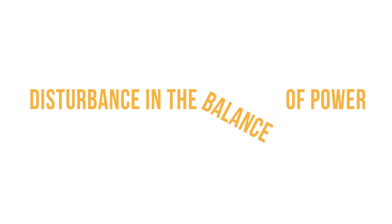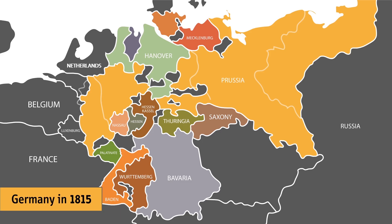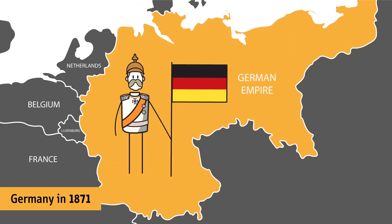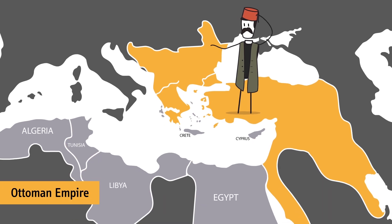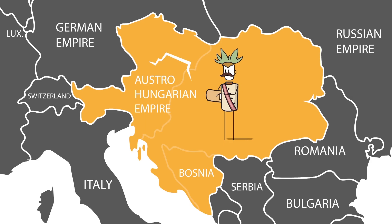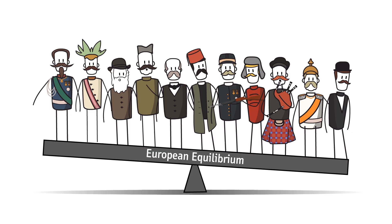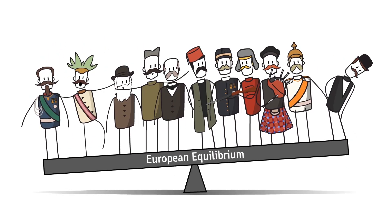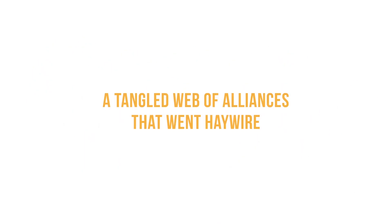Two: disturbance in the balance of power. The unification of Italy and of Germany in the mid-19th century, the crumbling of the 500-year-old Ottoman Empire, an unstable post-revolution France, and an Austria-Hungary struggling to sustain a multinational empire in an era of nationalism, disturbed an equilibrium that had kept Europe together for centuries.